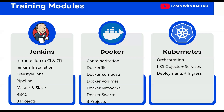I'll also focus on the configuration management part, covering config maps and the secrets concept. Finally, I'll be talking about the storage concept in Kubernetes, which is related to persistent volumes and persistent volume claims. Following that, I'll be discussing Helm charts and the RBAC concept as well. Along with these, I'll also talk about monitoring of applications and servers using Prometheus, Grafana, and also the ELK stack.